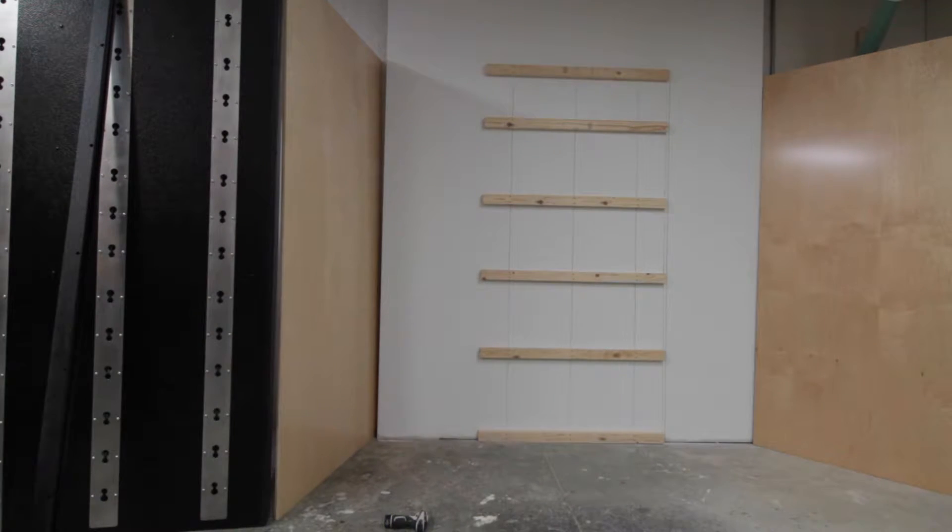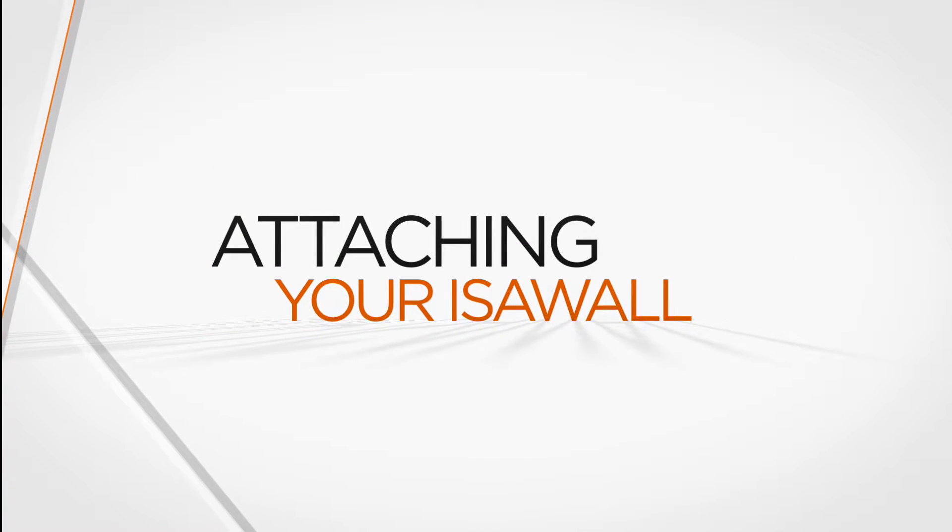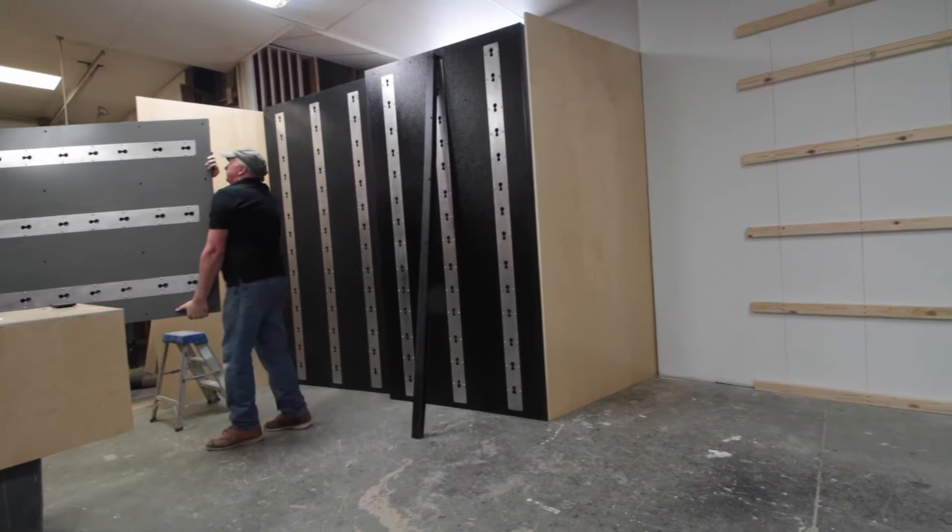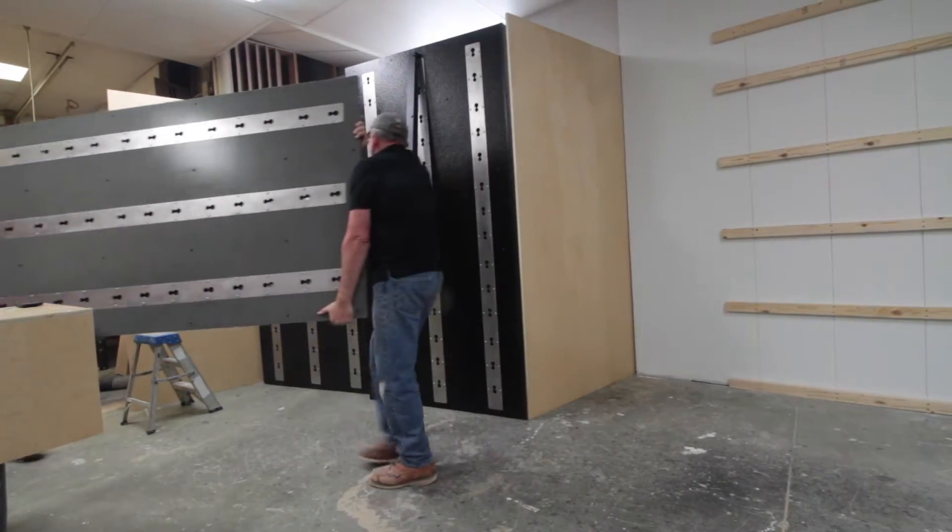After installing the horizontal struts, you're ready to install your wall. The front plates are numbered to orient yourself as to the top and bottom.